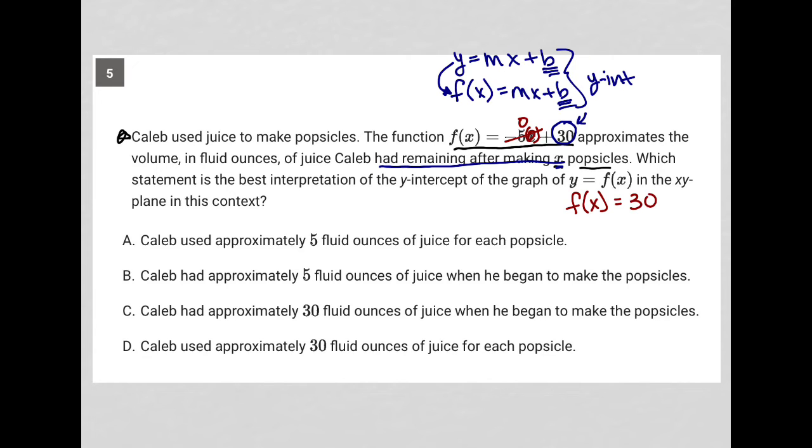Now what does that mean? That means that before any popsicles are made, there are 30 fluid ounces of juice. And then after you start making popsicles, you're taking basically 5, that's what the negative 5 here would mean, 5 fluid ounces of juice per popsicle.